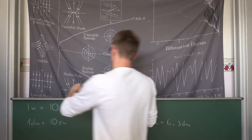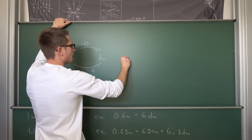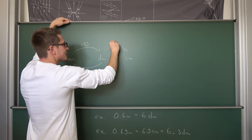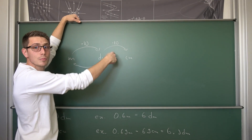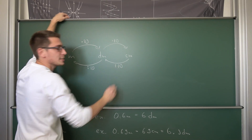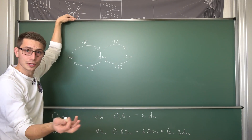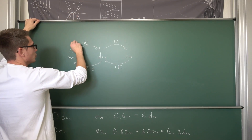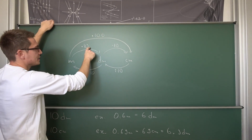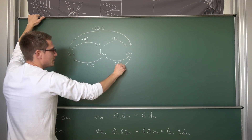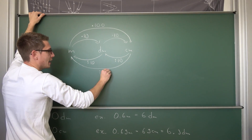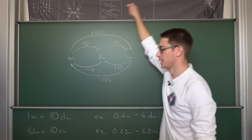To complete the diagram: to convert from decimeters to centimeters, multiply by 10. To go from centimeters to decimeters, divide by 10. Or you can go further and convert from meters to centimeters by multiplying by 100 — since 10 times 10 is 100. Going from centimeters to meters, divide by 100.